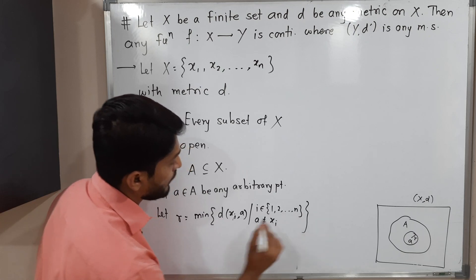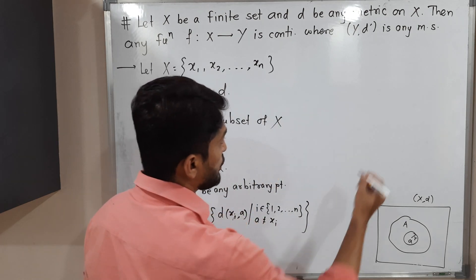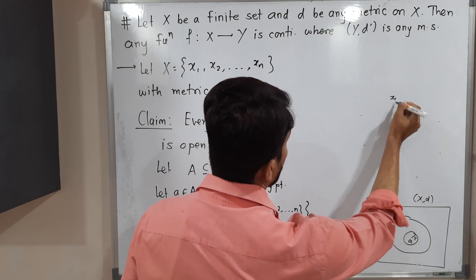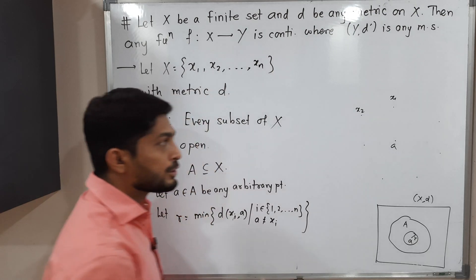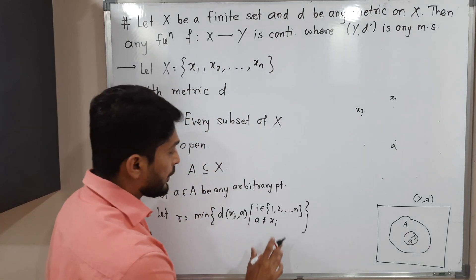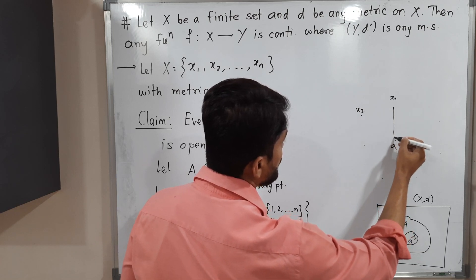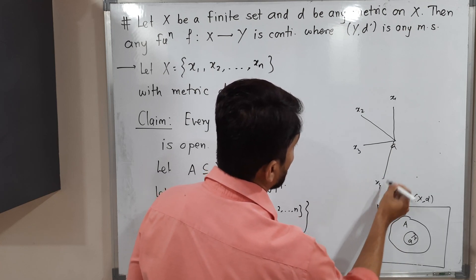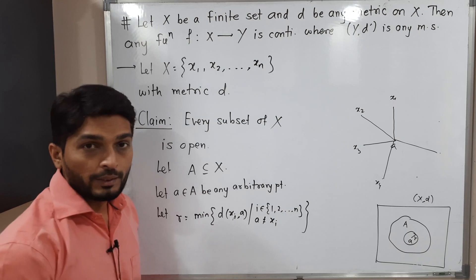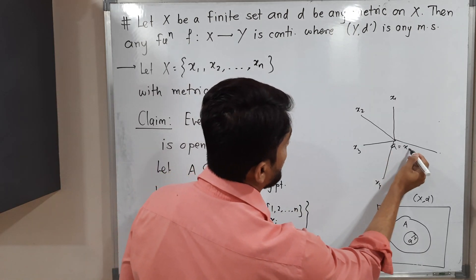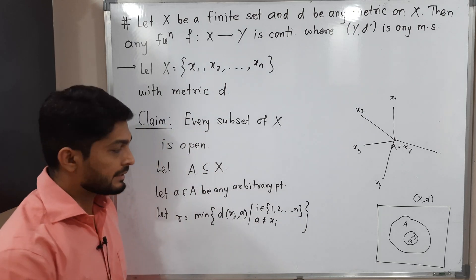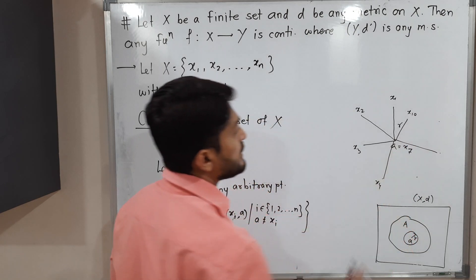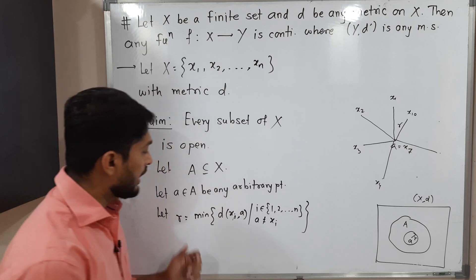Let me explain with the help of a diagram. As you know, X has a finite number of elements: x1, x2, and so on, and point a is one of them. I am going to find the distance of a from each other point — distance from x3, x4, and so on — but a should not equal xi (don't find the distance from itself). In this way we find the minimum distance among all these, and we call it R.